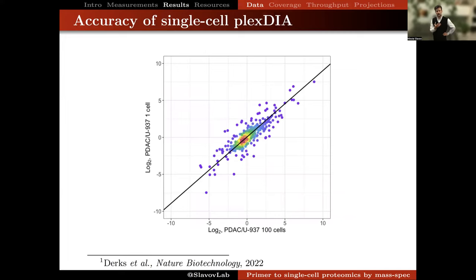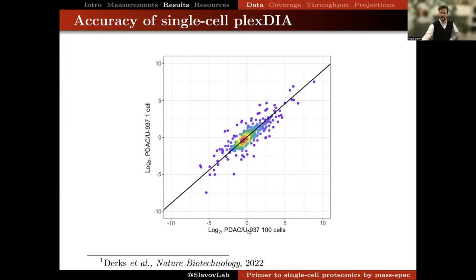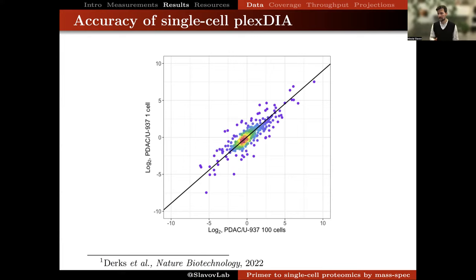Zooming out from raw data to hundreds of proteins: comparing relative protein abundances between PDAC and U937 cells from bulk samples and individual single cells shows very good agreement. The dynamic range is about a thousand-fold in relative protein changes on both axes. This is a strength of the Plex-DIA method and is very difficult to achieve with isobaric mass tags.